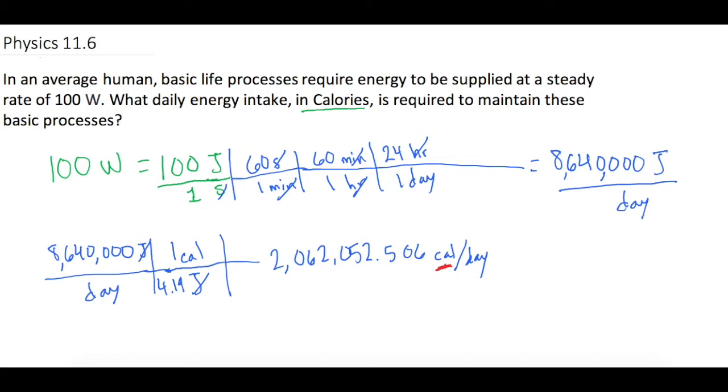But we want big C calories. Obviously, you probably have talked in class about how, when you look on the back of your food and the nutrition facts, and they tell you there's 1,500 calories in whatever you're eating, they're talking about big C calories, which is one big C calorie is 1,000 little c calories.